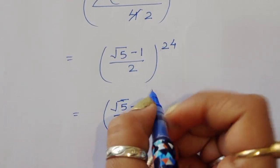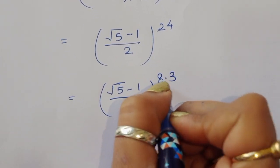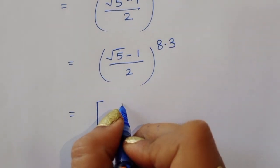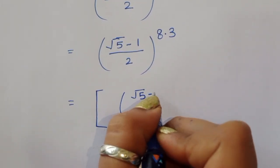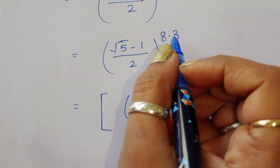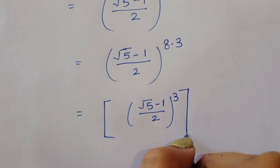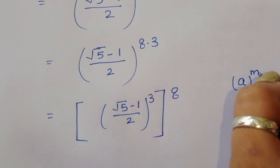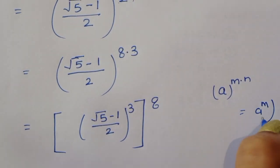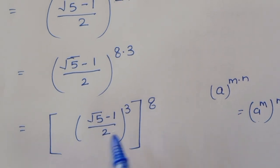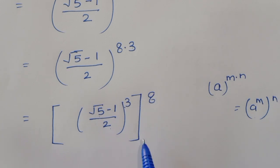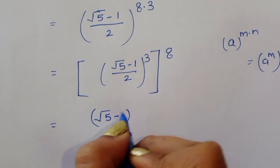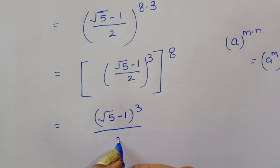We can rewrite the power 24 as 8 × 3, since 8 × 3 = 24. Using the formula (a^m)^n = a^(m×n), we can write this as [(√5 − 1)/2 raised to the power 3], then that whole quantity raised to the power 8. Now we expand (√5 − 1)³ divided by 2³ in the inner bracket.